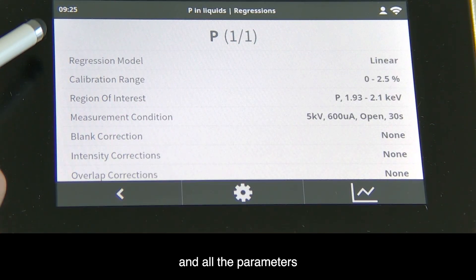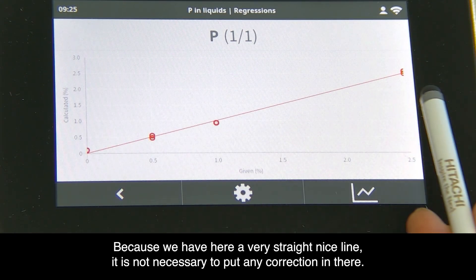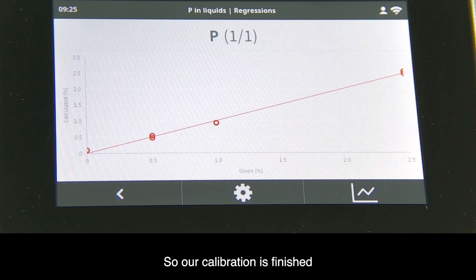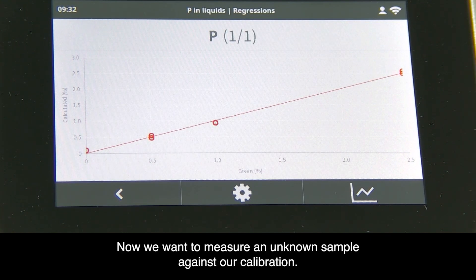You can see all the parameters. Because we have a very straight, nice line, it's not necessary to put any correction in there. Our calibration is finished and we're ready to use it for routine measurements. Now we want to measure an unknown sample against our calibration.